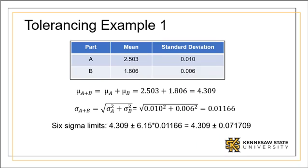Let's consider this example. Part A and Part B come from different suppliers. They are independent. First, we find the average and standard deviation of the stacked parts.